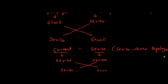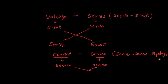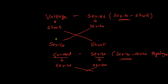Some textbooks even use this nomenclature, so you need to understand it. The formula is: first, rename voltage as shunt and current as series, and just interchange it. So in place of shunt, rename it as shunt on the right side — just change voltage to shunt and current to series.